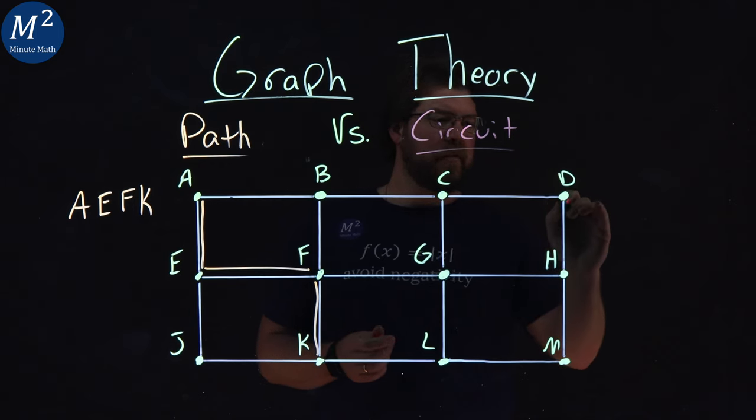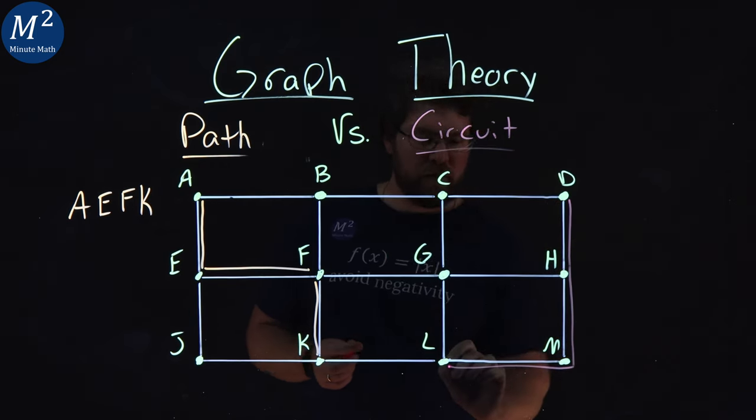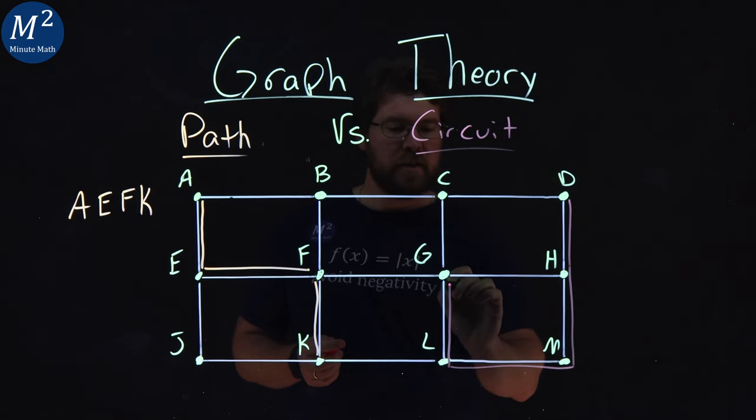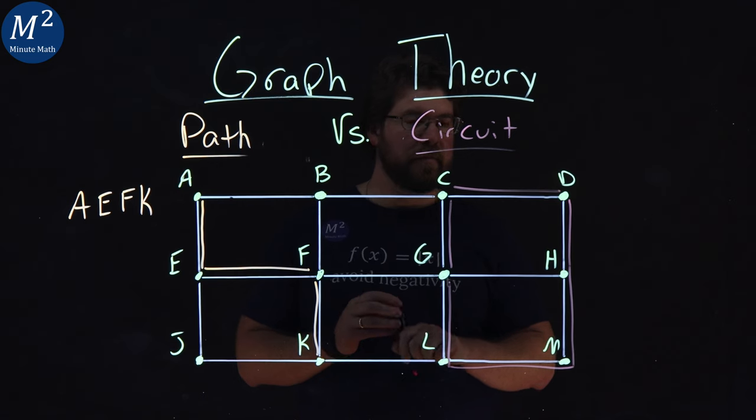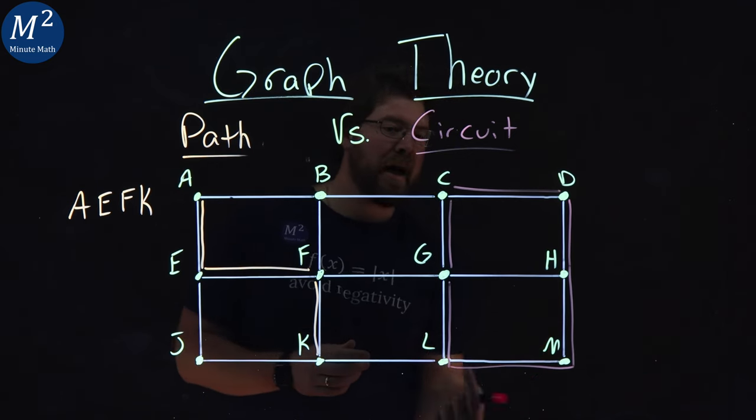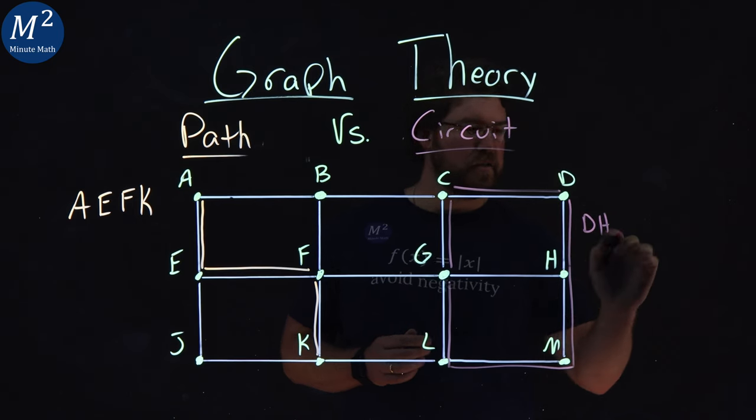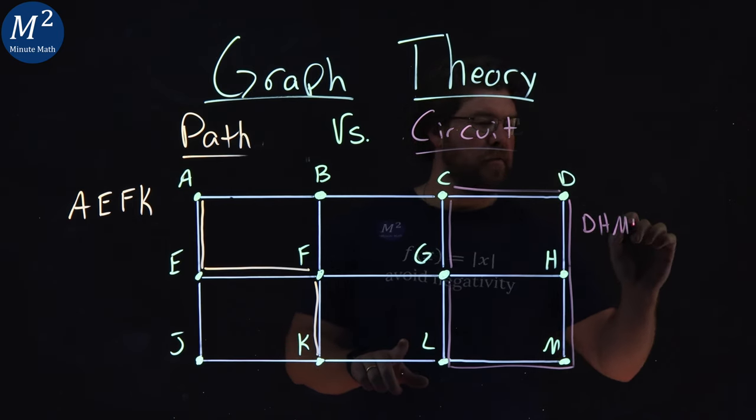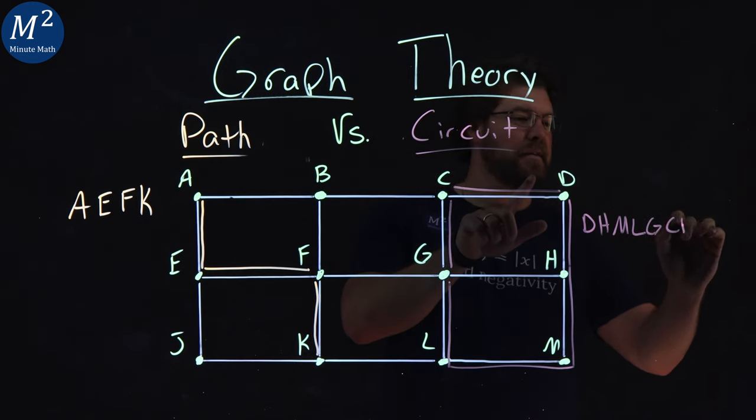So if we have a circuit like this that goes from D to H to M to L to G to C to D, that is a circuit. It comes back full circle. So our circuit path would be D to H to M to L to G to C back to D.